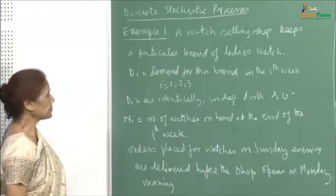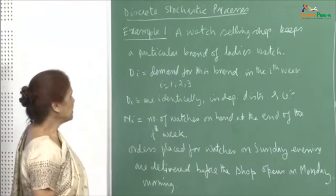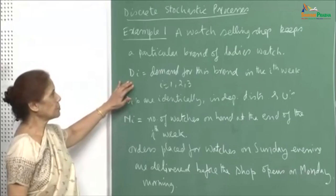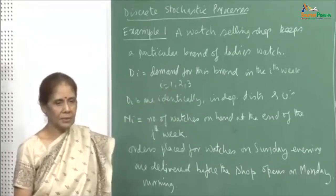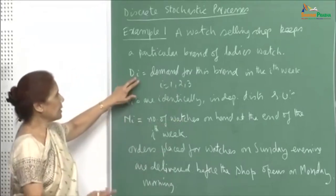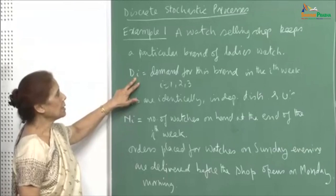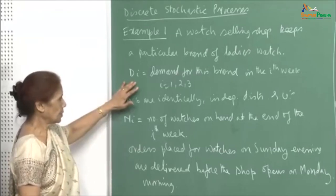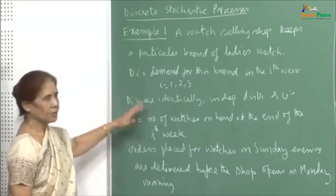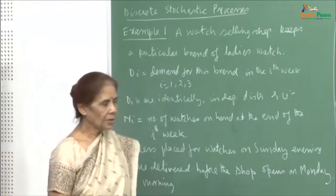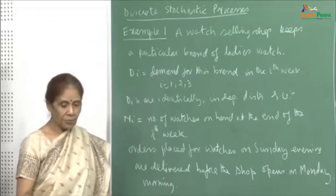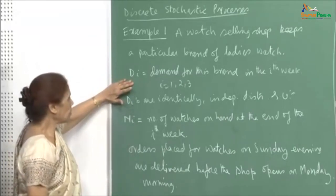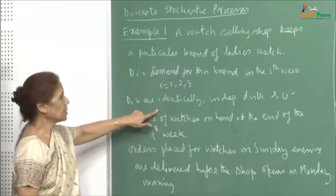Let us look at one example. A watch selling shop keeps a particular brand of ladies watch. Let d_i denote the demand for this brand in the i-th week. Let us say our planning horizon is three weeks. So d_1 will be the demand in the first week, d_2 in the second week, and d_3 in the third week. The d_i's are random variables because the demands are not certain — otherwise the shopkeeper's job would be very easy.